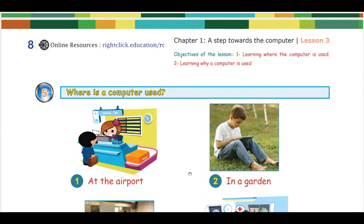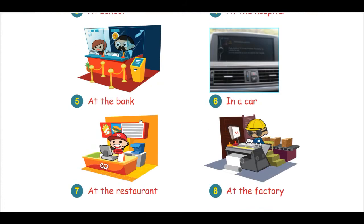Lesson 3, Chapter 1, Grade 1. This is the third lesson in Grade 1 and it is for a period of one session, one hour. The objectives of the lesson is to learn where the computer is used and learning why a computer is used.